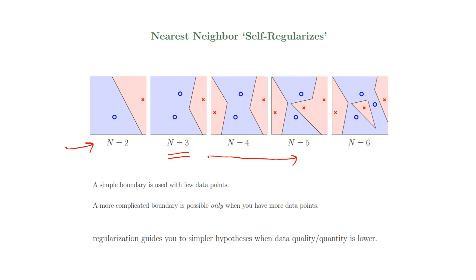For example, with n equals four, five, six, and so on, my hypothesis is getting more complex. And if you remember from one of the previous lectures about regularization and how regularization works - as my hypothesis gets more complex, I want to make it simpler by putting some conditions on it. Regularization was guiding us to a simpler hypothesis, especially when the data quality was not good or the quantity of the data was less. So we needed more regularization with less data.